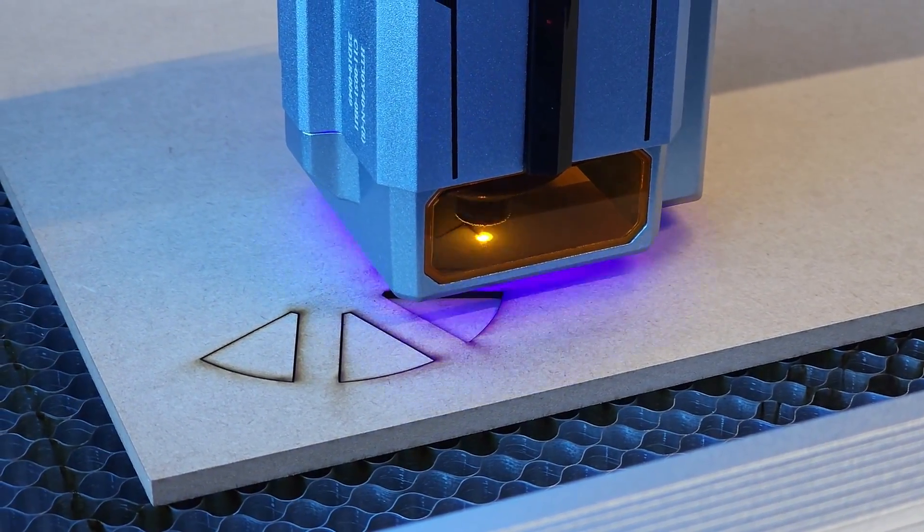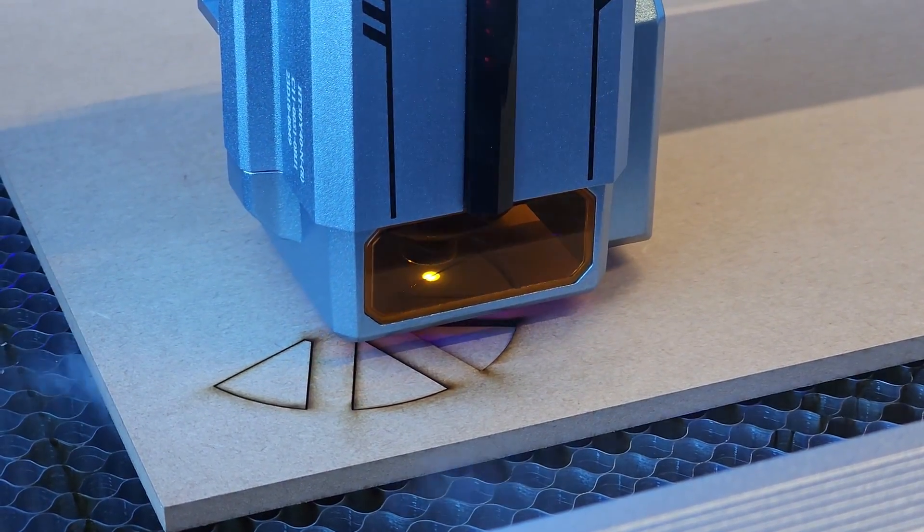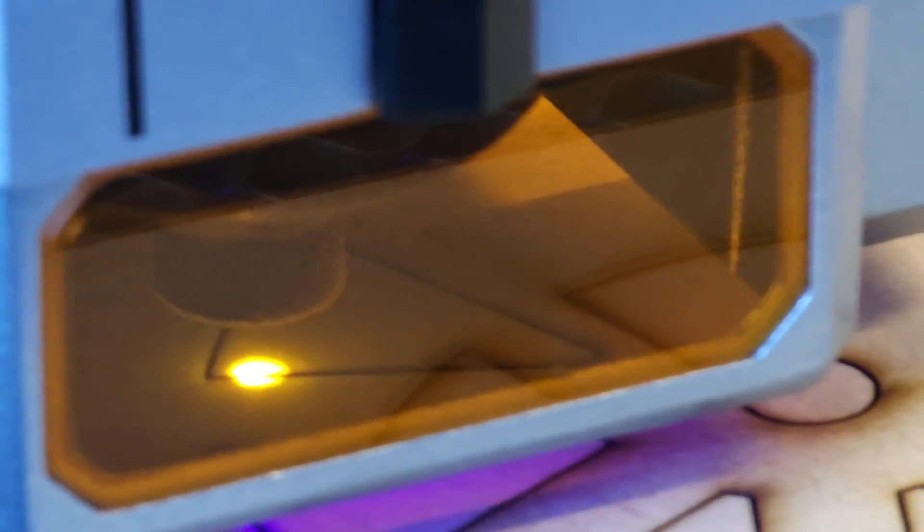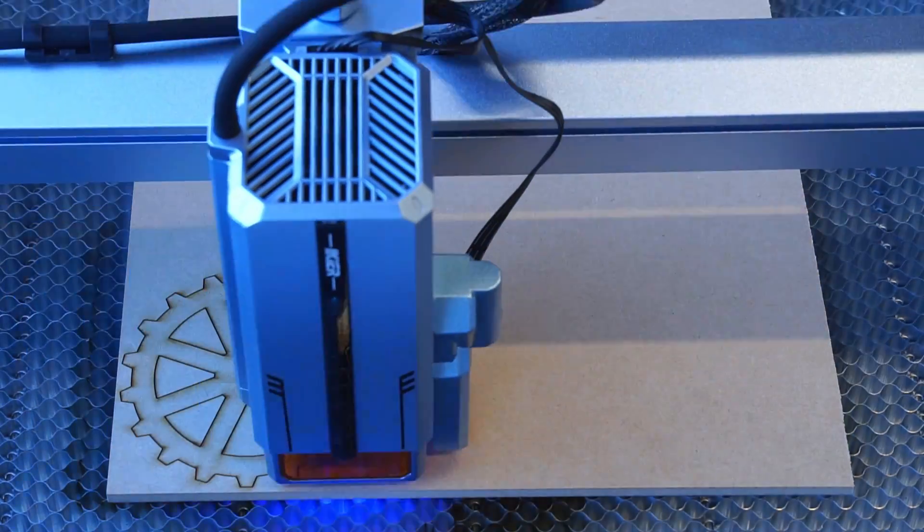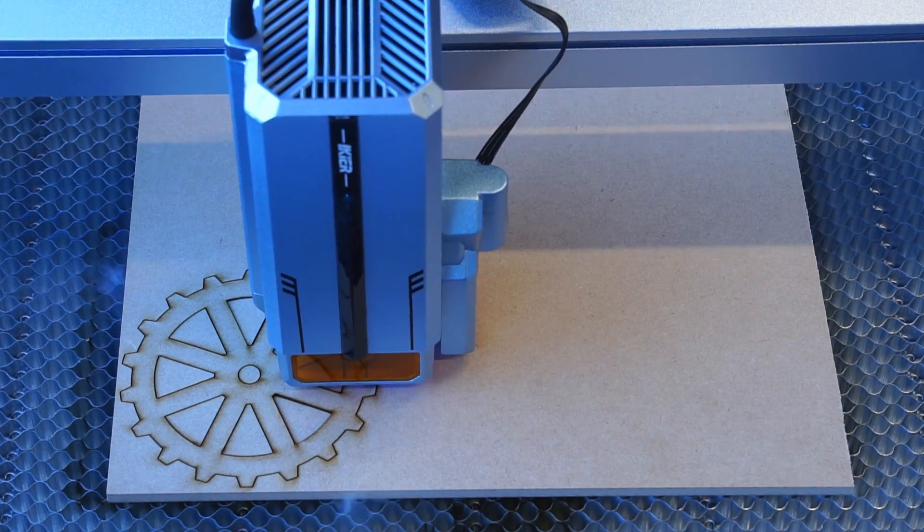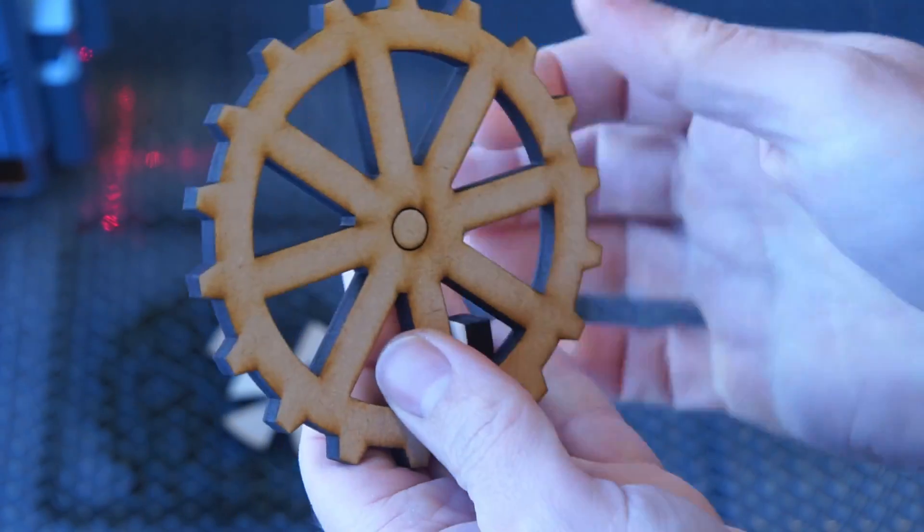In this setup I'm cutting a gear from 6mm MDF. The total cut time was 3 minutes 32 seconds. The gear was dimensionally accurate and the cuts were clean. Nice.